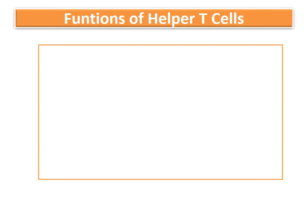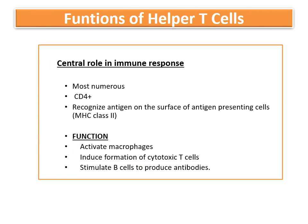Helper T cells are CD4 positive cells and they are the most numerous ones. In healthy adults, the normal count varies between 500 to 1500 per millimeter cube of blood. They recognize the antigen on the surface of APCs in combination with class 2 MHC protein. There are three functions: number one is activation — they activate the macrophages, which play an important role in both innate immunity and acquired immunity by presenting antigens.